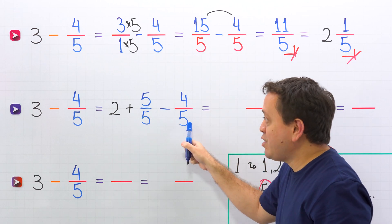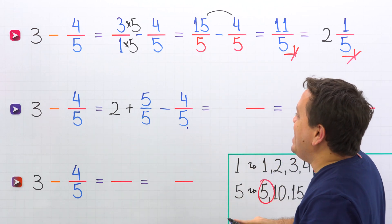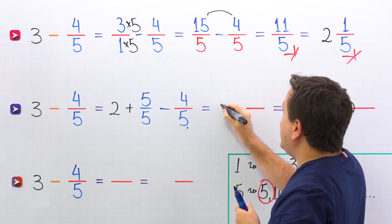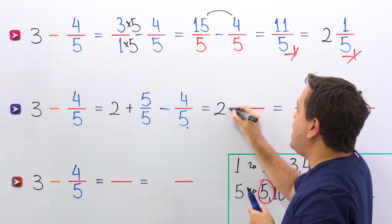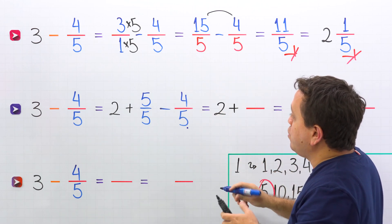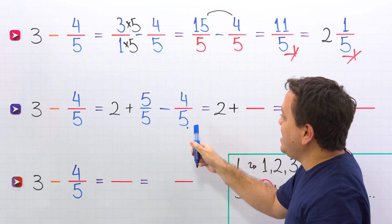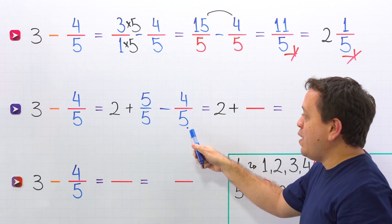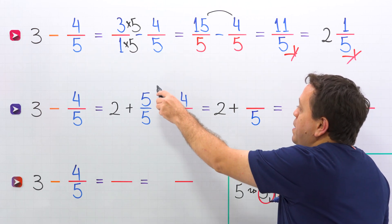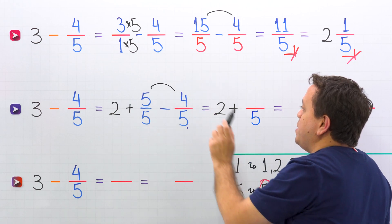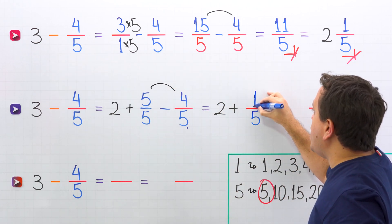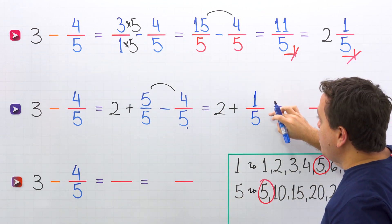Now we have two fractions with the same denominator — this will be easy. We continue with 2 plus. Now we subtract 5 fifths minus 4 fifths. These two fractions have the same denominator, so we continue by subtracting the numerators: 5 minus 4 gives us 1. The result is the fraction 1 fifth.